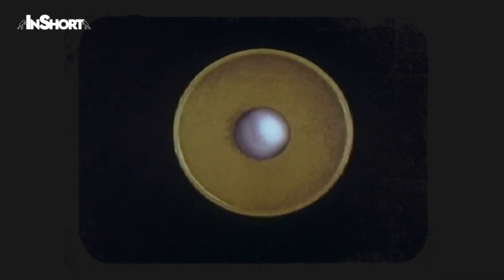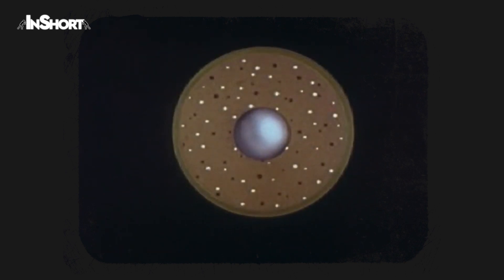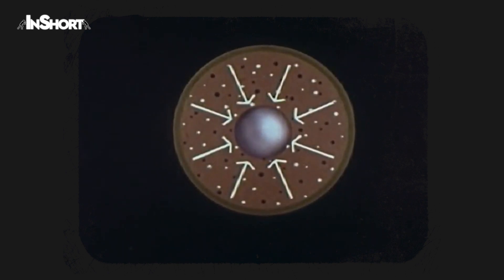It compresses the fissionable material to greater density to make it supercritical. To do this, the sphere is enclosed by a shell of ordinary explosive designed to direct its explosive force inward. This effect is called implosion.